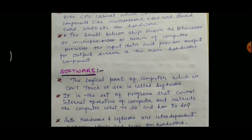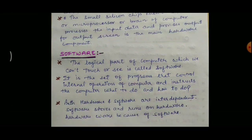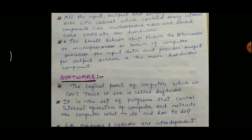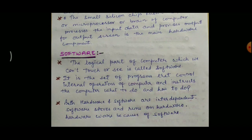The next part is software. Software is the logical part of a computer which we cannot touch or see. It is the set of programs that control all overall internal operations of a computer and instructs the computer what to do and how to do. Software stores and runs on hardware, and hardware works because of software. So both hardware and software are interdependent.